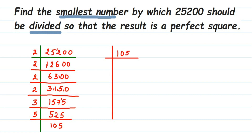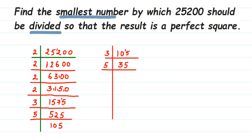I made an error earlier — 525 does go in the 3 table, I'm sorry for that. This method is still correct; you should use only prime numbers. 105 goes in the 3 table: 3 × 35 = 105. Then 35 goes in the 5 table: 5 × 7 = 35. And 7 × 1 = 7, so 7 is our last prime factor.